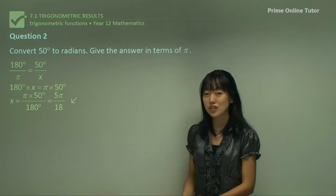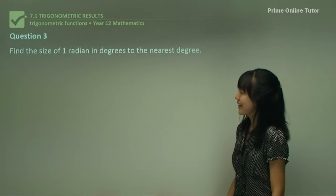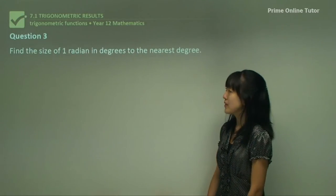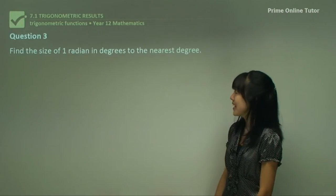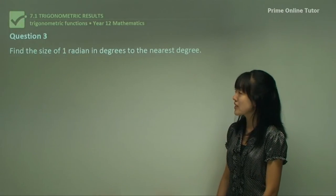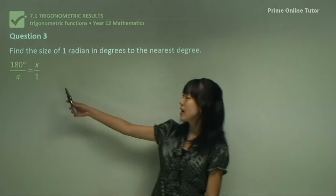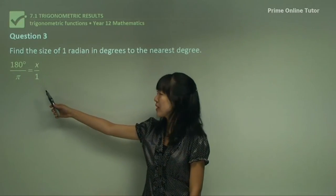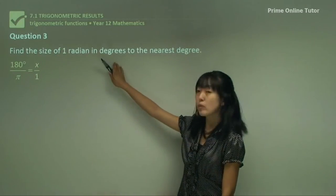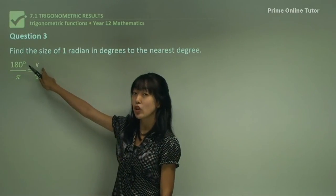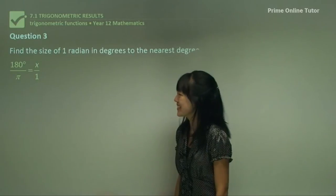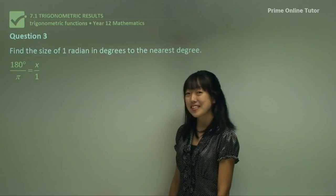Now moving on to question 3. This is a bit different because now the question asks us to convert radians into degrees, but the first step is always the same, to write this ratio. Keep in mind that because we want degrees now, not radians, the x is at the numerator not the denominator like the previous question. Next step is to cross multiply.